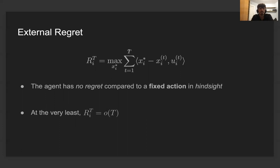The canonical measure of performance in this setting, and more broadly in online learning, is the notion of external regret. Here we're comparing the performance of the learning agent to the performance the agent would have obtained by playing the optimal fixed action in hindsight. At the very least, we want that the cumulative regret grows sublinearly with T, which in turn would imply that the average regret is vanishing.